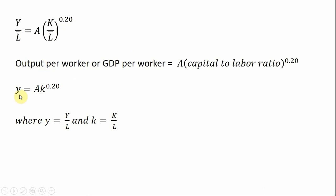What is commonly done is that Y divided by L is going to be represented by lowercase y. So where lowercase y equals output divided by the number of workers. And lowercase k represents the capital-to-labor ratio. So this is the output per worker production function.